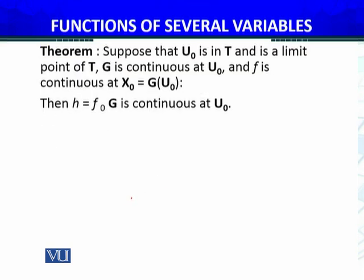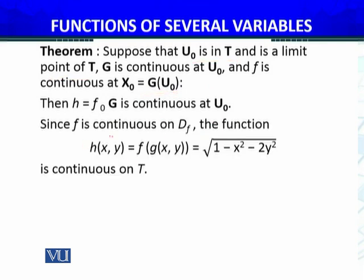The composite function theorem states: suppose u₀ is in T and is a limit point of T. If g is continuous at u₀ and f is continuous at x₀ = g(u₀), then the composition function h is continuous at u₀. Since f is continuous on its domain, the function h(x, y) = f ∘ g is continuous on the complete set T.